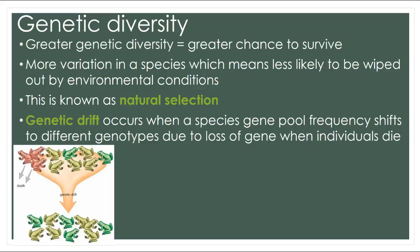Genetic drift is another term you need to become familiar with. This is where a species' gene pool — which is all the genes they have in the population — shifts between different genotypes. For example, genes that code for blue eyes may be lost in the gene pool because those individuals die out.